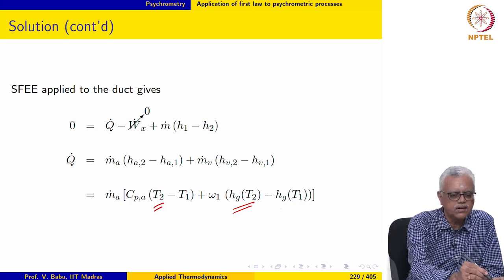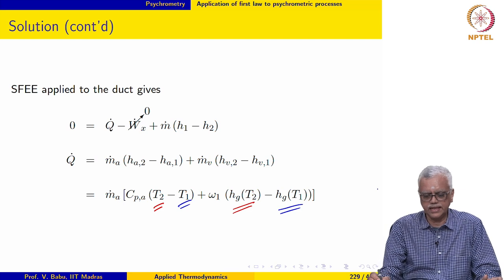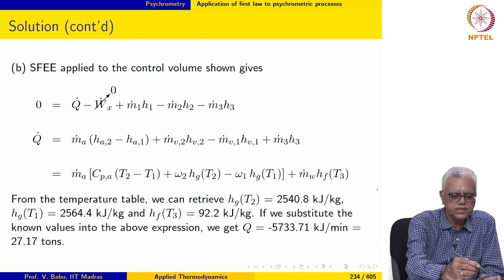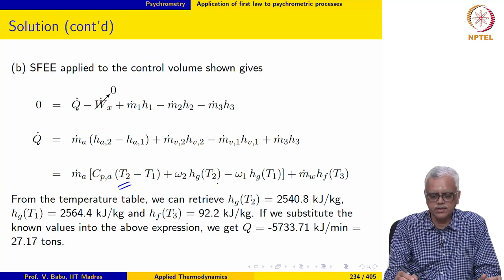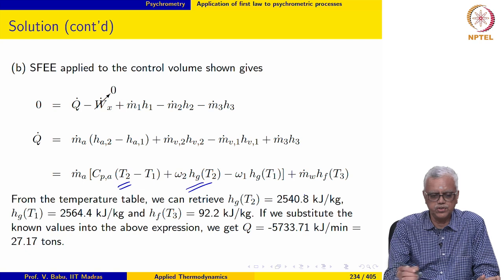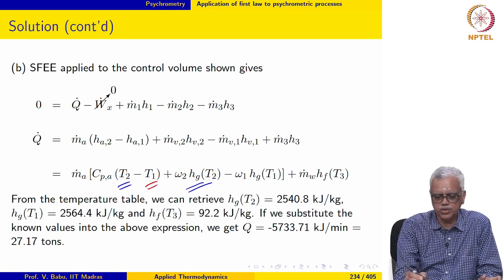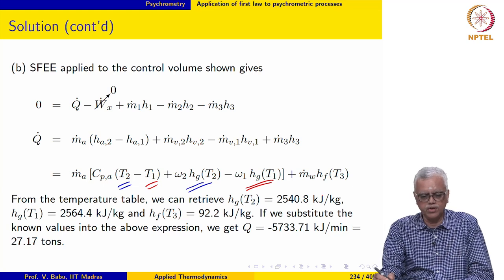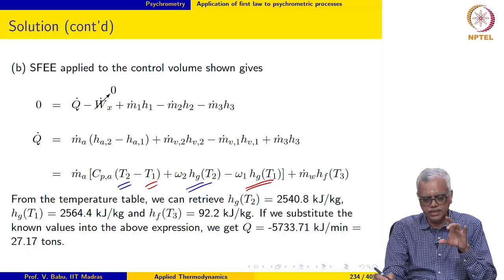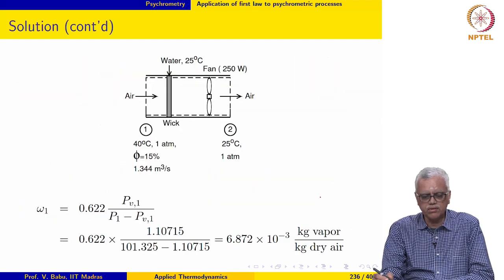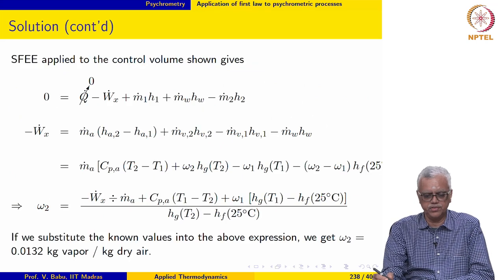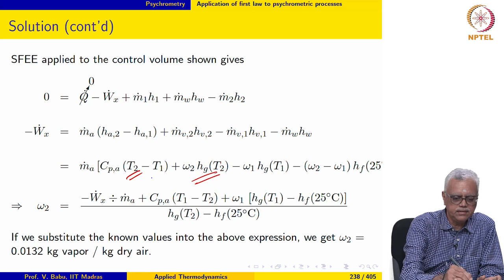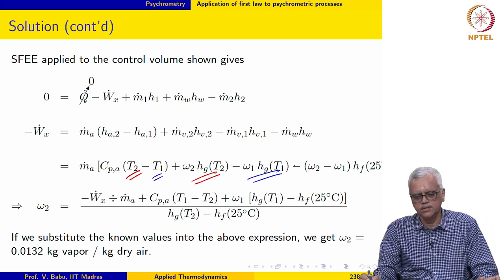Let me show this with a different color. This is the second combination. If you look at the next example we saw, you see the same thing: Cp times T2 plus omega times H2, and this combination Cp times T1 plus omega times H of T1. What you are seeing is actually the specific enthalpy defined on a per dry air basis, or per kg of dry air basis.